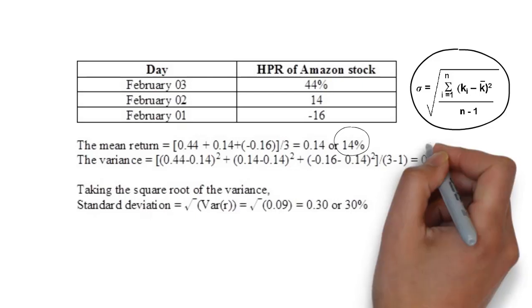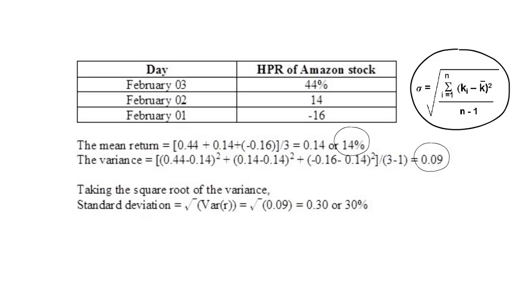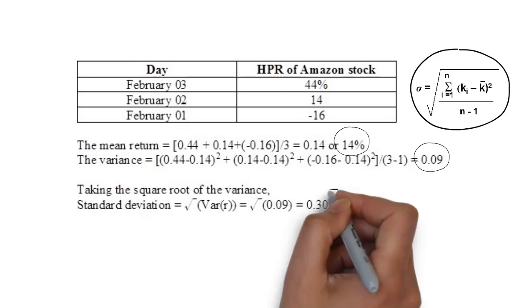N is 3. So, 3 minus 1. That gives you 0.09. To get the standard deviation, take square root of the variance, and you get 30%.